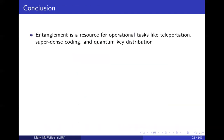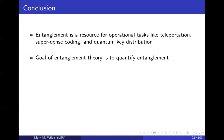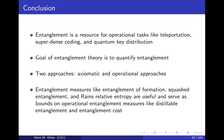We're at the end. We talked about a lot of stuff in this lecture series — how entanglement is a resource for tasks like teleportation, dense coding, and QKD. In entanglement theory, what we're trying to do is quantify entanglement: to say how much entanglement does a quantum state have. To answer that question, we cooked up operational tasks like entanglement distillation and dilution, which connect to something of physical interest. We talked about all these different entanglement measures — entanglement of formation, squashed entanglement, Rains relative entropy — and how they're bounds on these operational tasks.